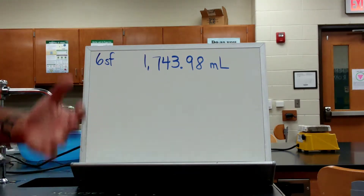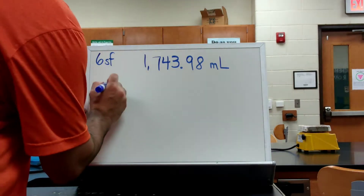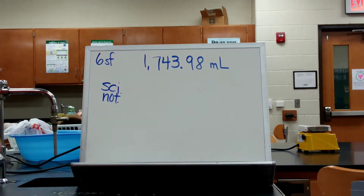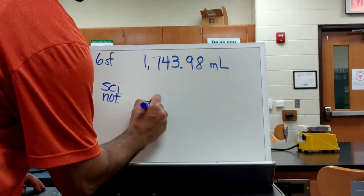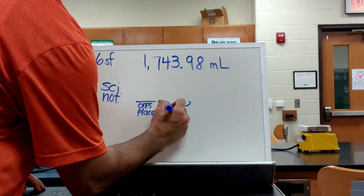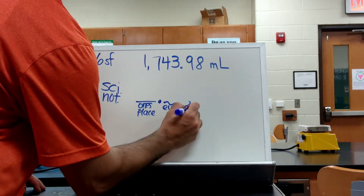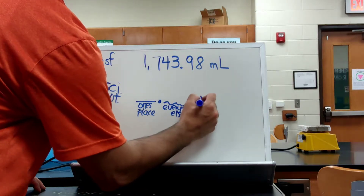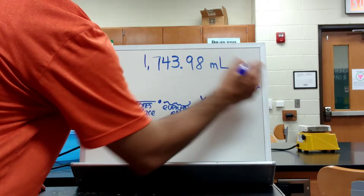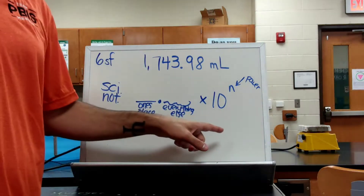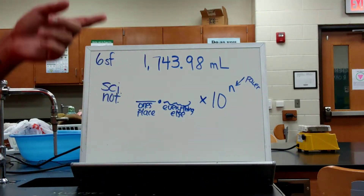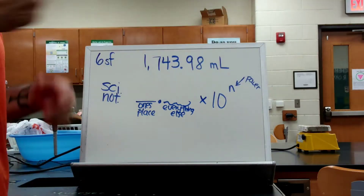If I want to write something in scientific notation, we typically want the ones place, a decimal point, everything else, times ten to some power. We always write our numbers in scientific notation times ten to the something, and that power is how many times I've moved the decimal point to the left or to the right.